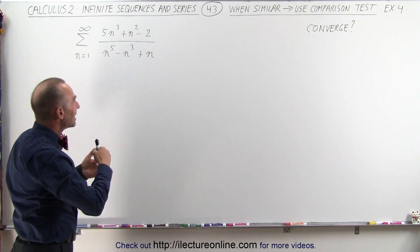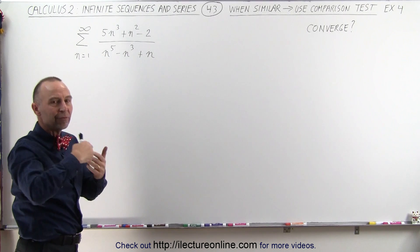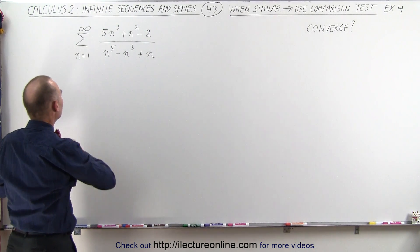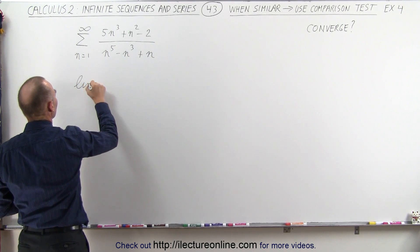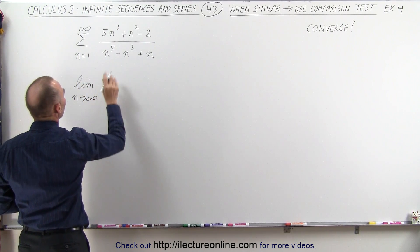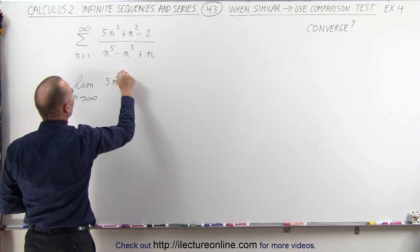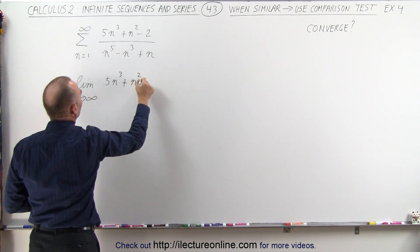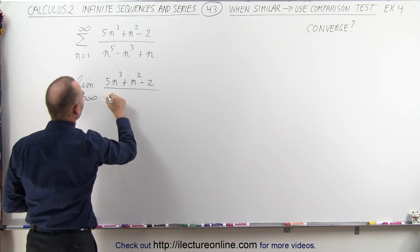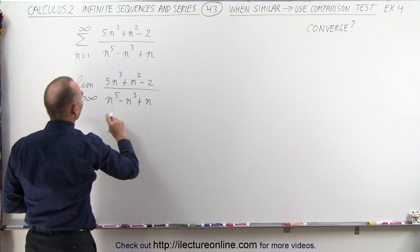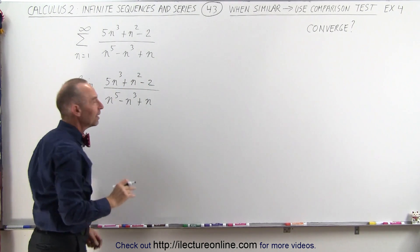What we can do is to see if the n-term as n goes to infinity will actually converge to 0. So we're going to find the limit as n approaches infinity of this quantity right here, 5n to the third plus n squared minus 2 divided by n to the fifth minus n cubed plus n. And so what happens to this term as n goes to infinity?